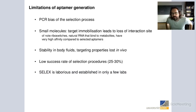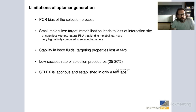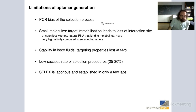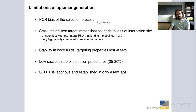The limitations we see in aptamer generation are multi-faceted. A very strong limitation is PCR bias in the selection process. Most selection processes in the lab rely on PCR, which is an artificial process, and we'll see how we can get over this in the next slides.